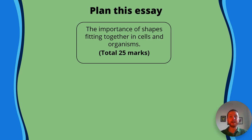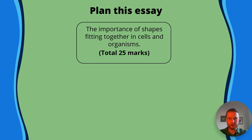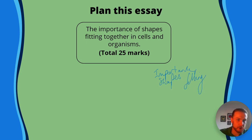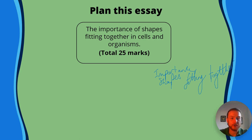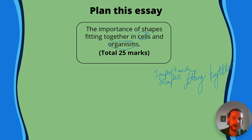Let's put this into practice. The essay title is 'the importance of shapes fitting together in cells and organisms'. I'd start by picking out the key terms: importance, shapes fitting together, cells, and organisms — so we can talk about inside the cell or more macroscopically. I'm going to pick five topics: enzymes and digestion, proteins, antibodies and immunity, neurotransmitters and receptors, and muscles. That's five topics to be safe, since I need detailed A-level knowledge of four or more to get into the top bands.